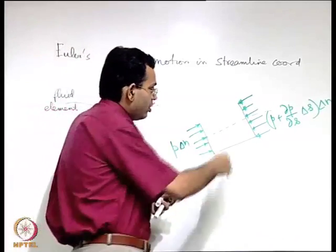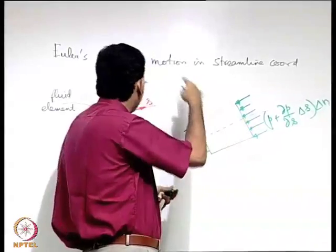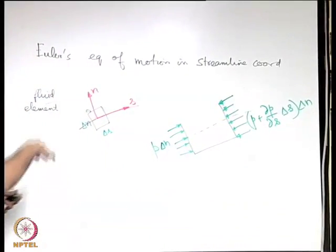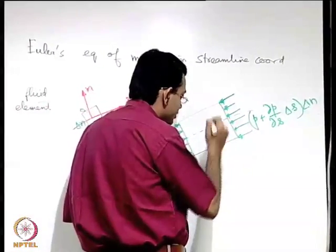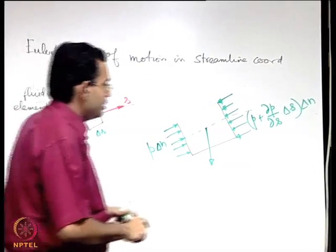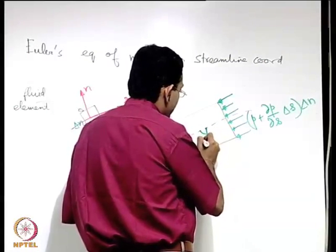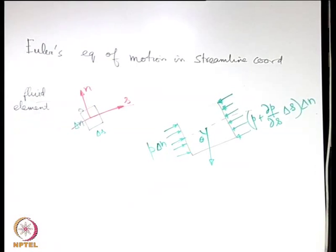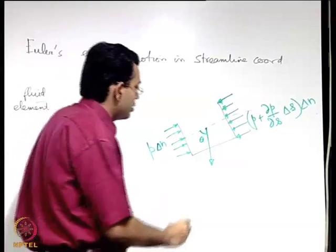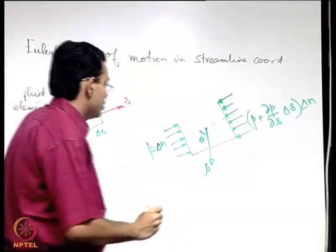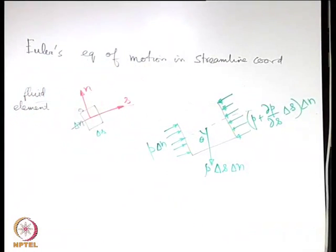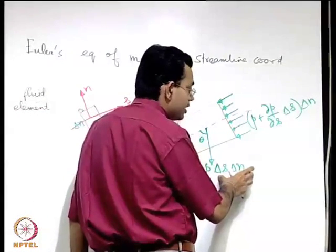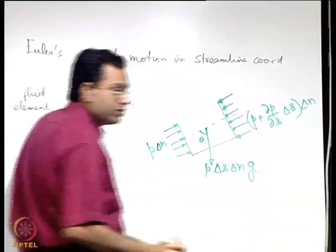On the other faces, forces act along the N direction, so they have no components along S. However, the weight of the fluid element does have a component along S. The weight is rho times delta-S times delta-N times 1 (volume) times g, giving the mass times gravitational acceleration.